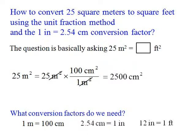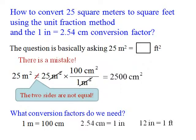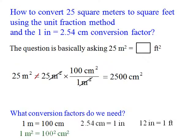So what equals one? One meter square equals 100 centimeter square. If you cancel the meter square, the answer would be 2,500 centimeter square — but there is a mistake. Do you know what the mistake is? Because of the mistake, the two sides are not equal. One meter square is not equal to 100 centimeter square.